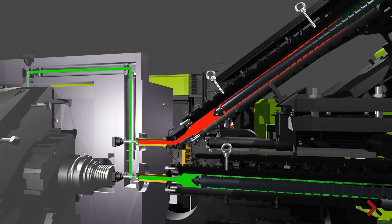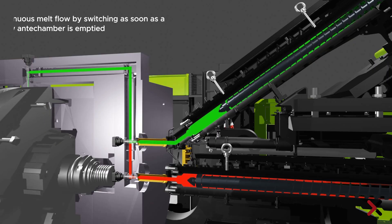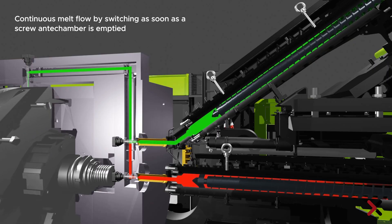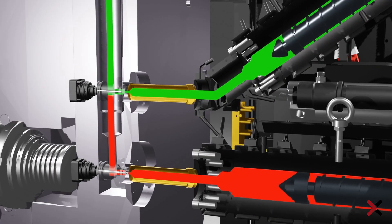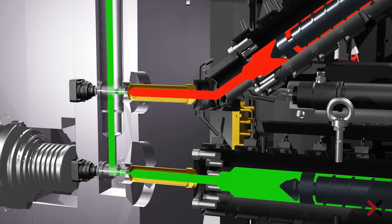As soon as the screw chamber of one unit is depleted and additional material is required to fill the cavities, the system switches to the second unit, where the same pressure is already established, illustrated by the color change.